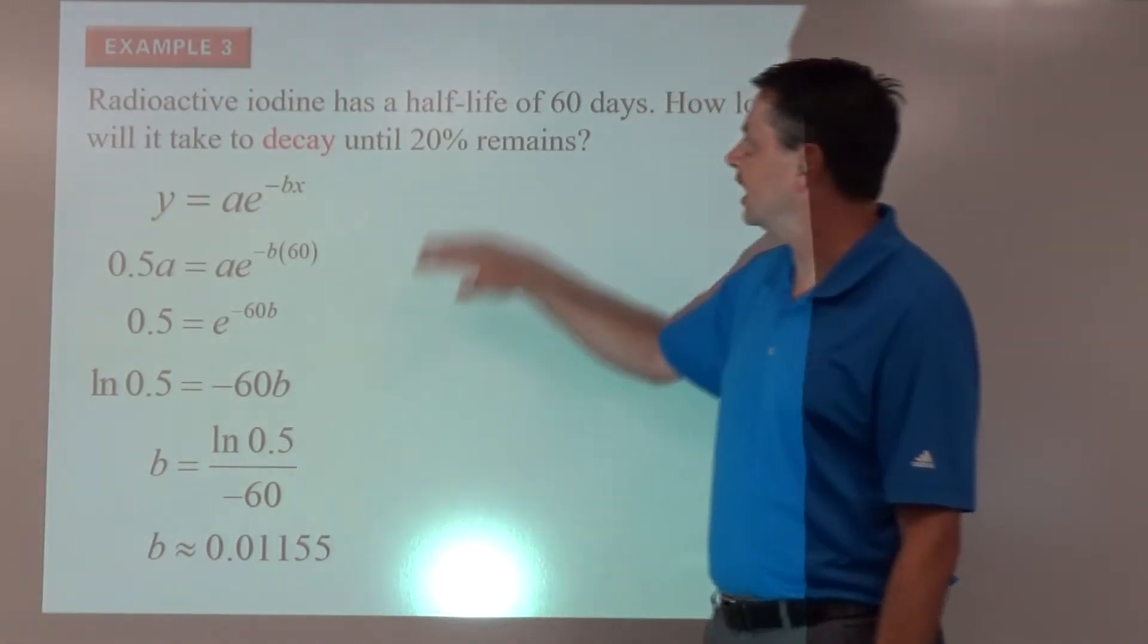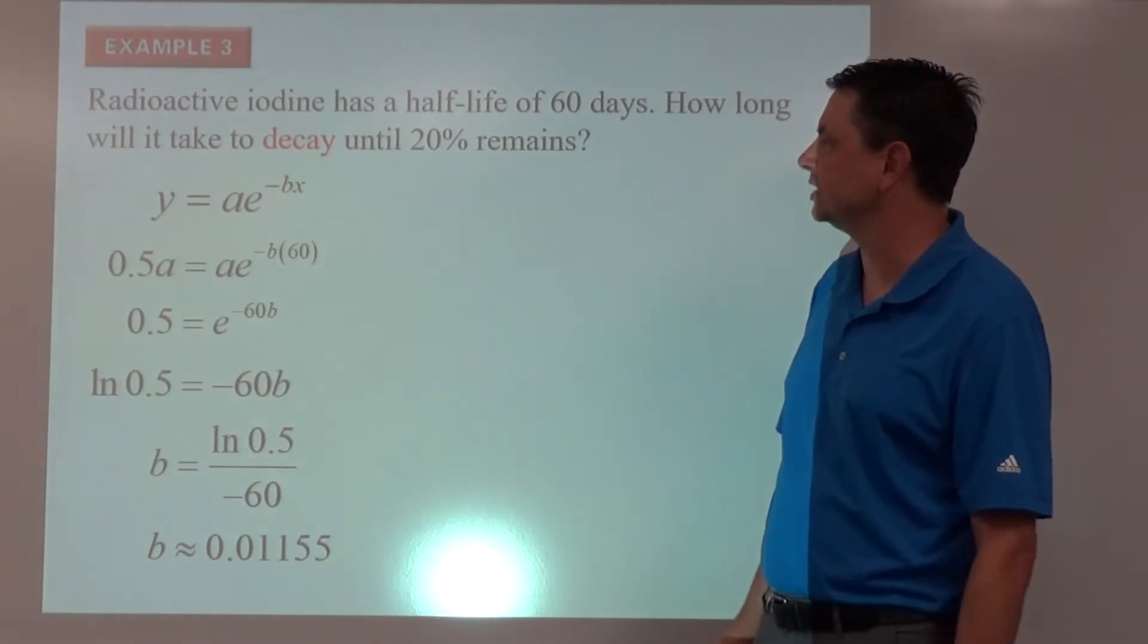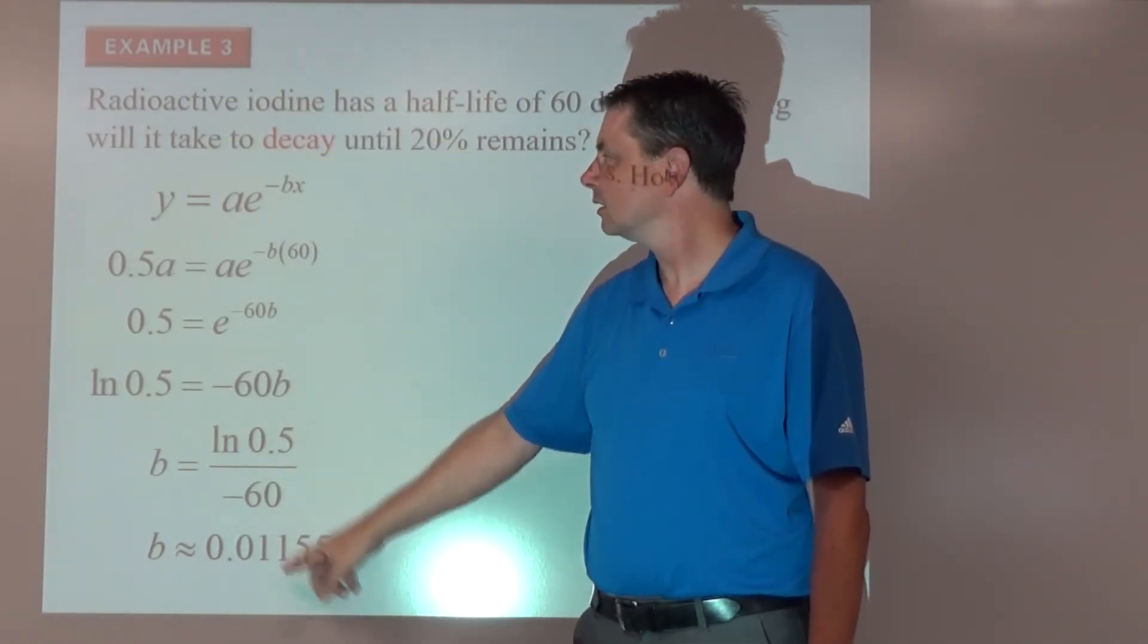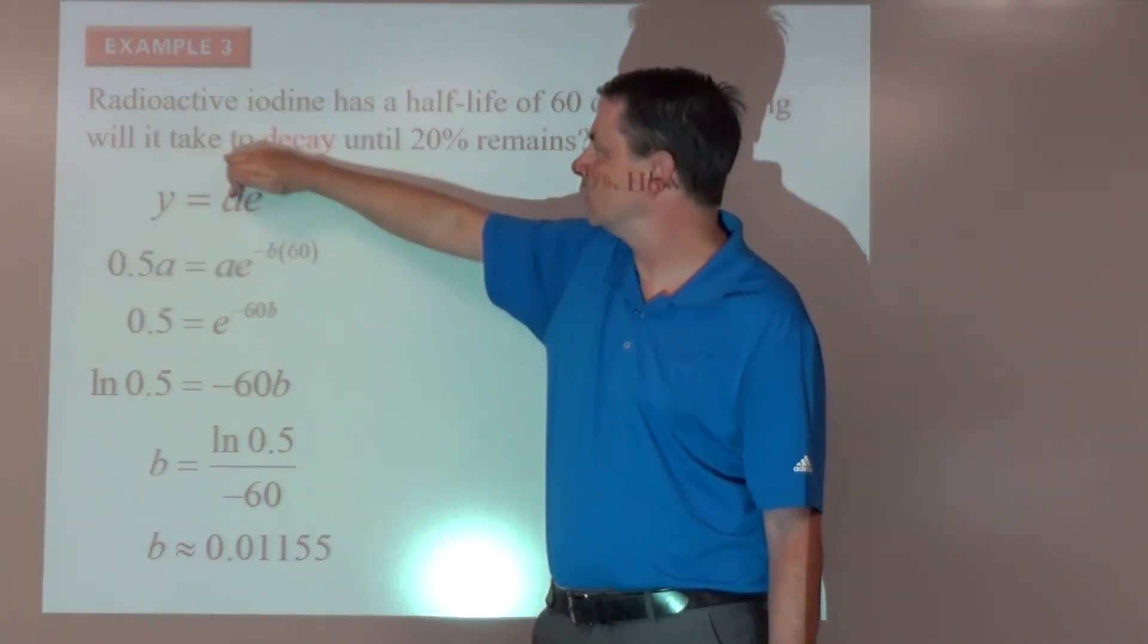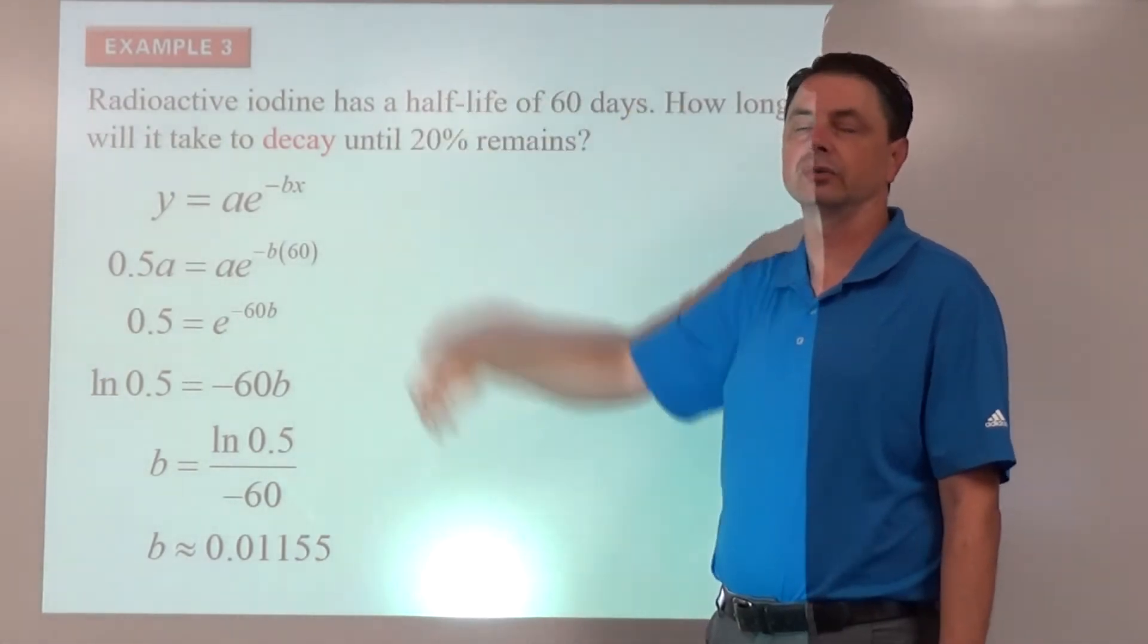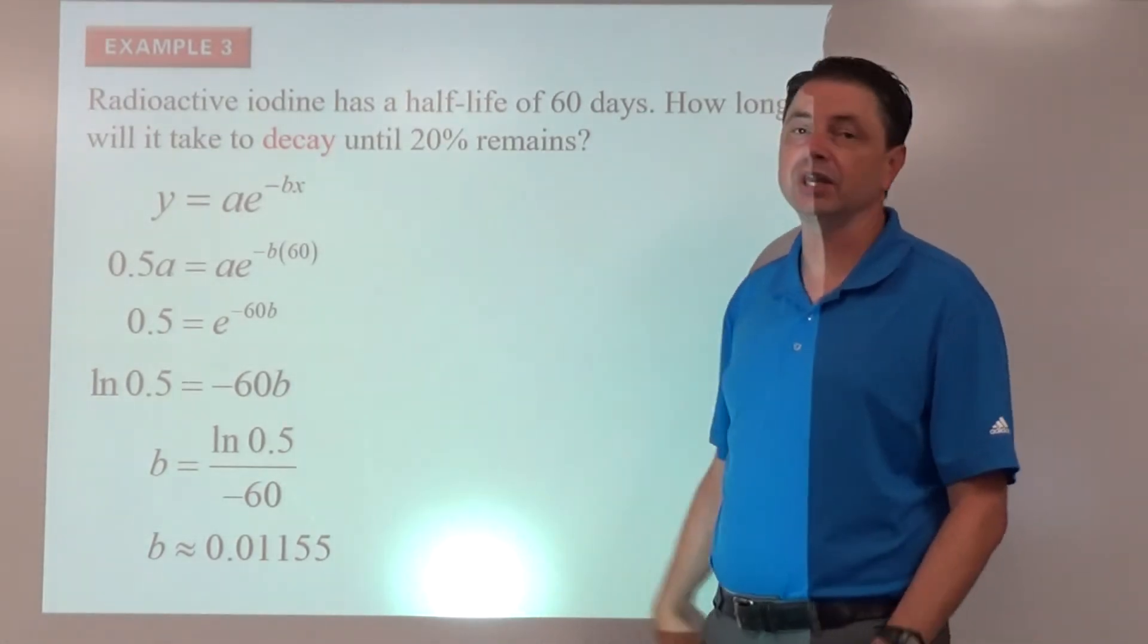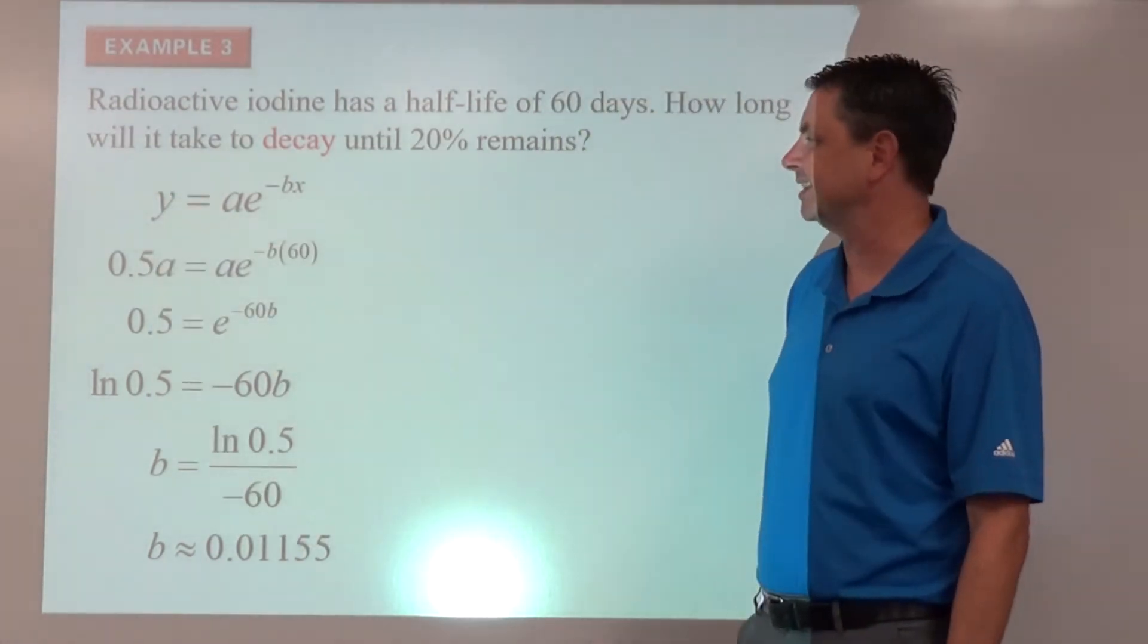So since we've got b, now we're ready for the rest of the problem. How long will it take to decay until 20% remains? So we go back to our original. We now know the b. We're going to use this. And as far as a, the initial amount, we still don't know. And when 20% remains, that will be 20% of our original amount. Be careful on this because it might say until 20% decays away, in which case you need to figure out what remains. Because that's going to be your y. It's what's remaining, what is there.